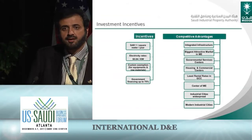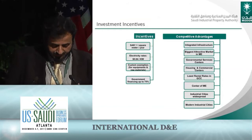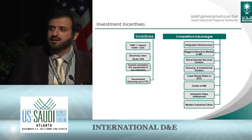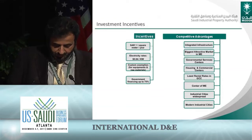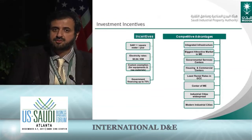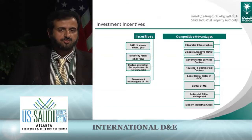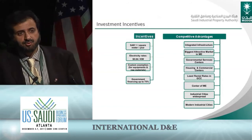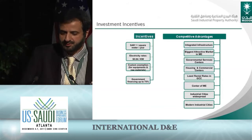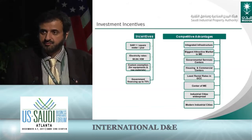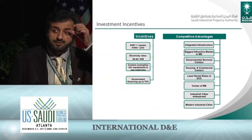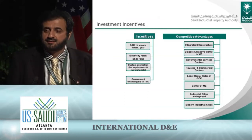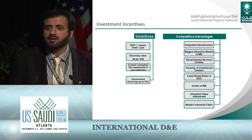In terms of incentives given to manufacturing companies, we have different incentives that have played a major role in promoting manufacturing and bringing investment from abroad. We provide land for about one Saudi riyal per square meter per year, which is almost equivalent to 25 cents per square meter per year. We also provide electricity at the rate of 4 cents per kilowatt, which is almost one third of what is charged here in the US. We also give customs exemptions on imported equipment, machinery, and raw materials, and we give financing up to 75 percent of the equity needed for manufacturing projects.